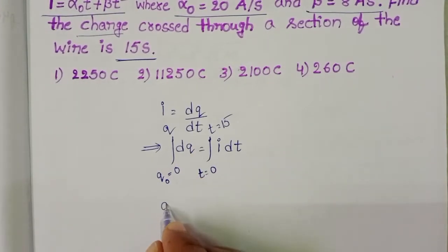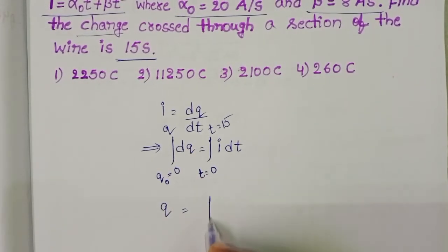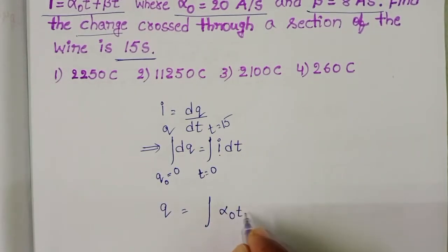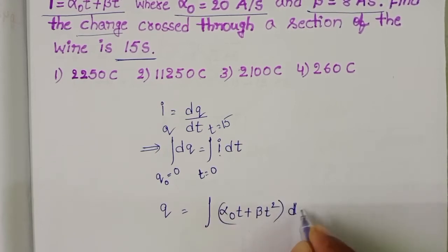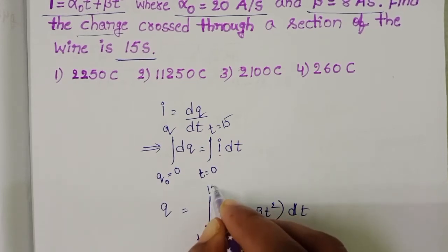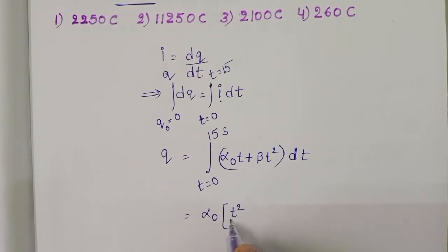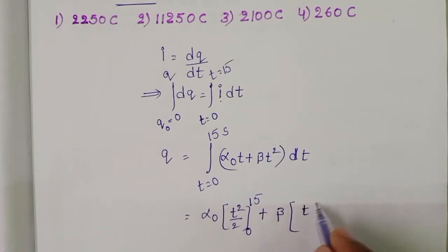So integral dQ equals Q. Integral in place of I, α₀t plus βt squared. Here electric current is a function of time, limits from zero to 15 seconds. Integral t dt equals t squared by 2, plus integral t squared dt equals t cubed by 3, from zero to 15.